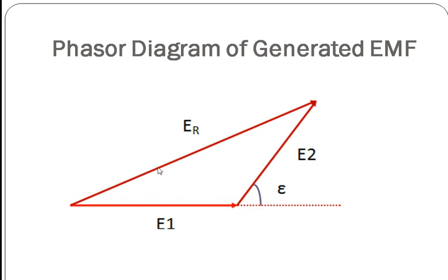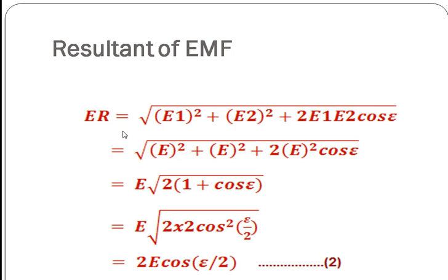ER is the resultant EMF available at the terminals of the coil. ER will be the phasor sum of E1 and E2, which can be calculated using the triangle law of addition of two vectors. So ER will be equal to root over E1 squared plus E2 squared plus 2 E1 E2 cos zeta. Since the magnitude of EMF generated in both coil sides are equal, we replace E1 and E2 by E. So ER will be equal to root over E squared plus E squared plus 2 E squared cos zeta.